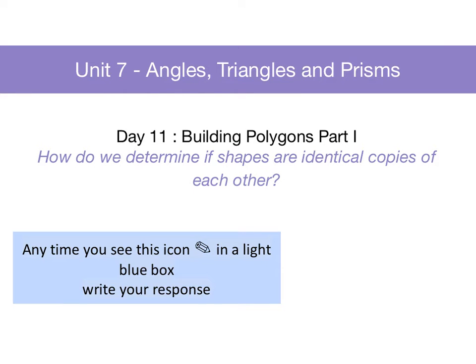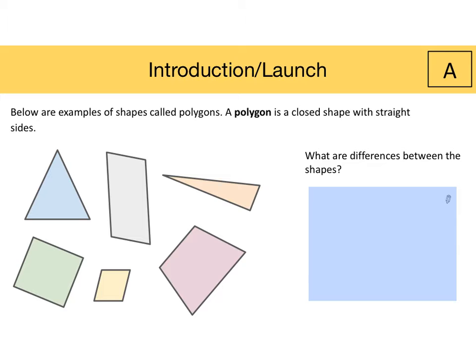7th graders will be in Unit 7, Angles, Triangles, and Prisms, Day 11, Building Polygons Part 1. How do we determine if shapes are identical copies of each other? Below are examples of shapes called polygons. A polygon is a closed shape with straight sides. What are the differences between the shapes?